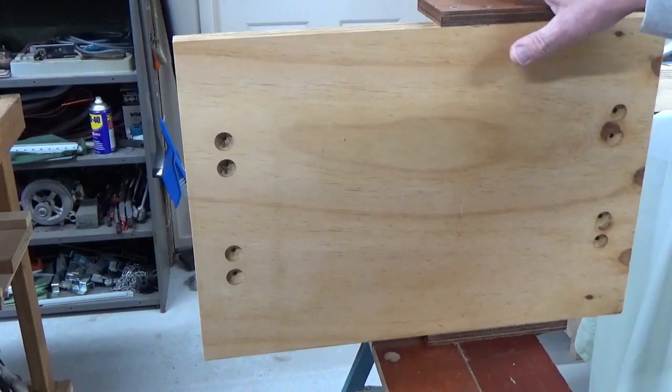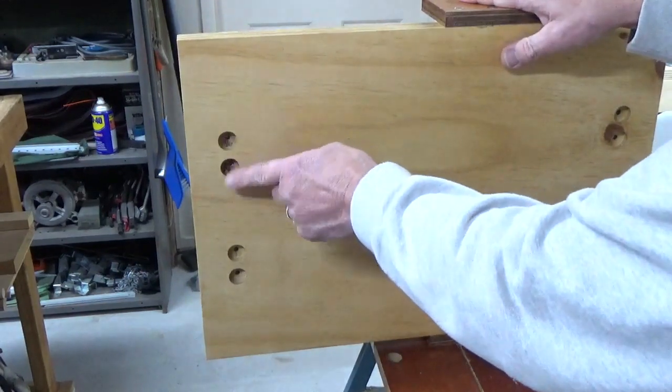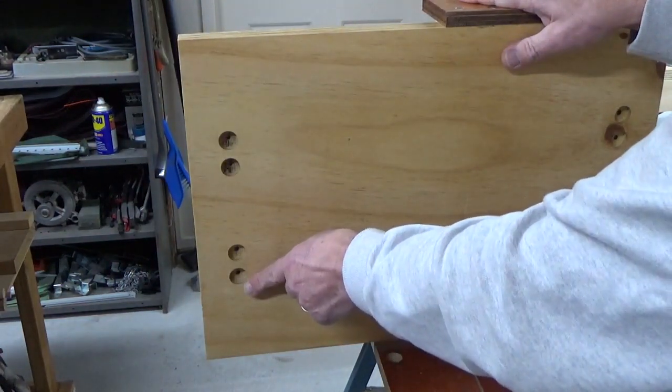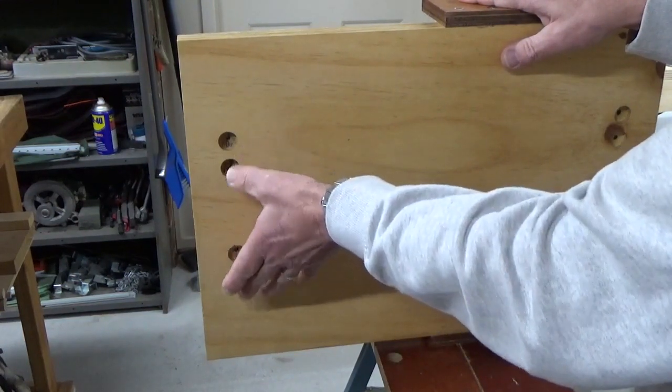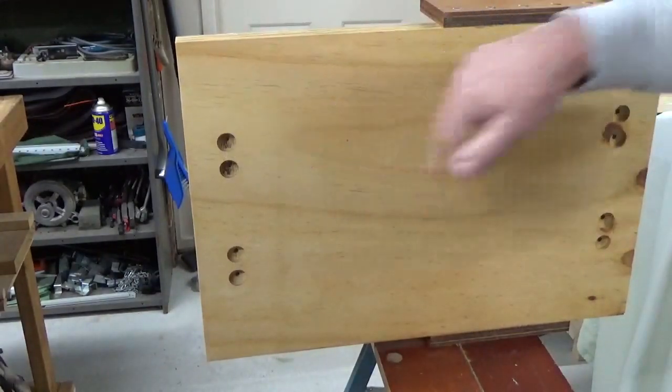So what we're looking at now is the actual bottom of the base and you can see here that we've got our recess holes put in. What we're going to do now is just put the machine screws through here, bring them out, and we'll do that on this end and the other end.